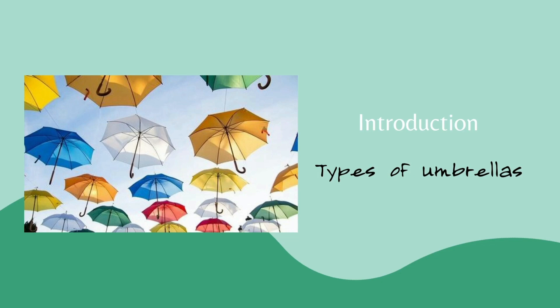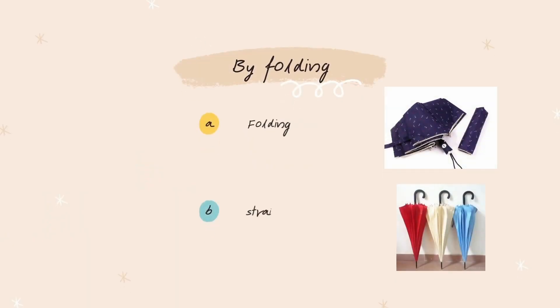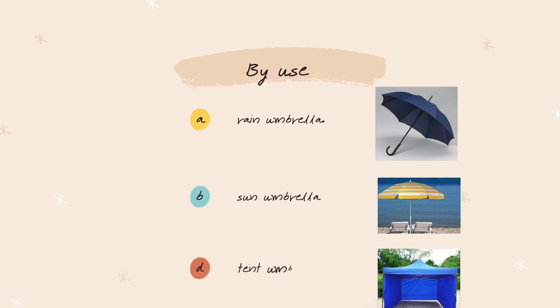First of all, the umbrella is a household item that we have all used. Do you know the types of umbrellas? According to the folding situation, umbrellas are divided into folding and straight umbrellas. They are also divided into rain umbrellas, sun umbrellas, and tent umbrellas according to their use.